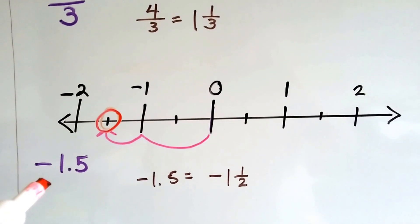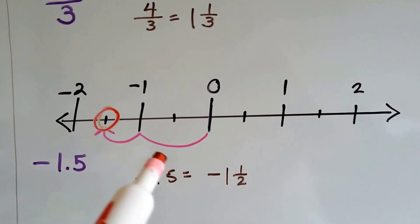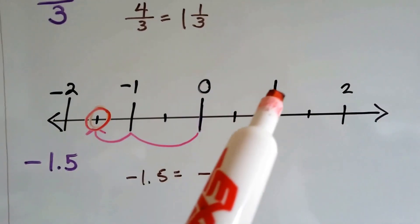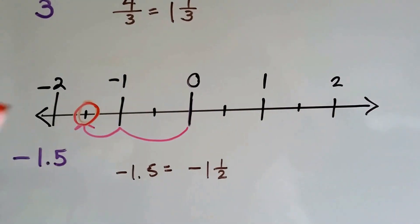If we have negative one point five, that's actually negative one and a half, because point five is a half. So we would draw our zero, our negative one, our negative two, our positive one, our positive two, make it all nice and evenly spaced.